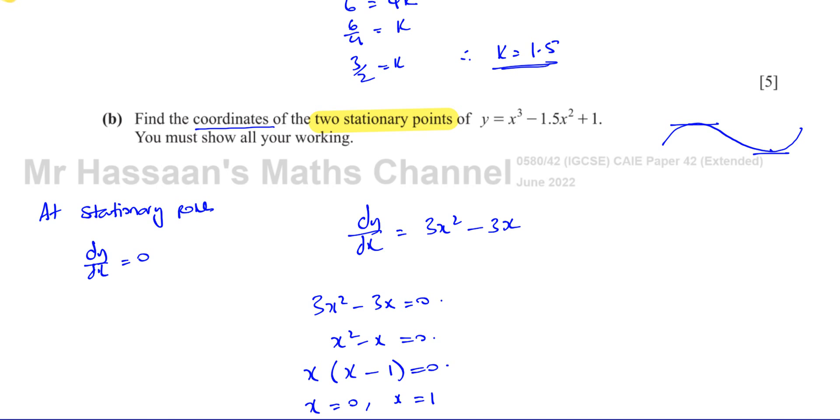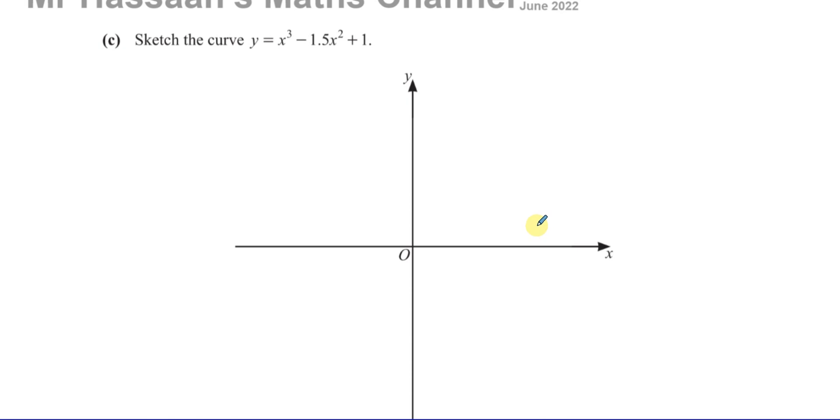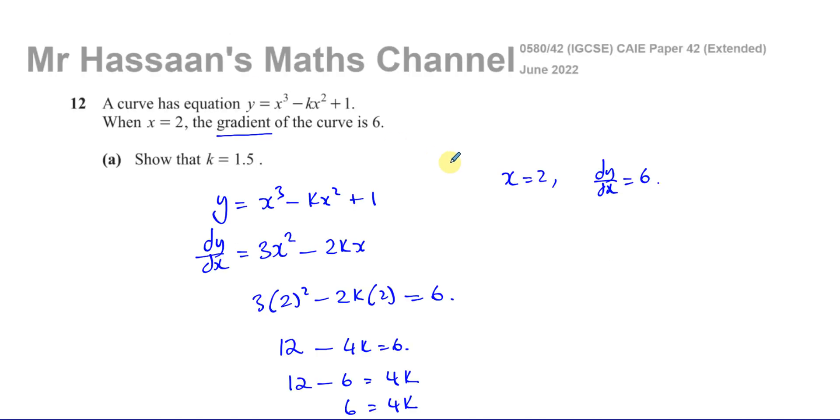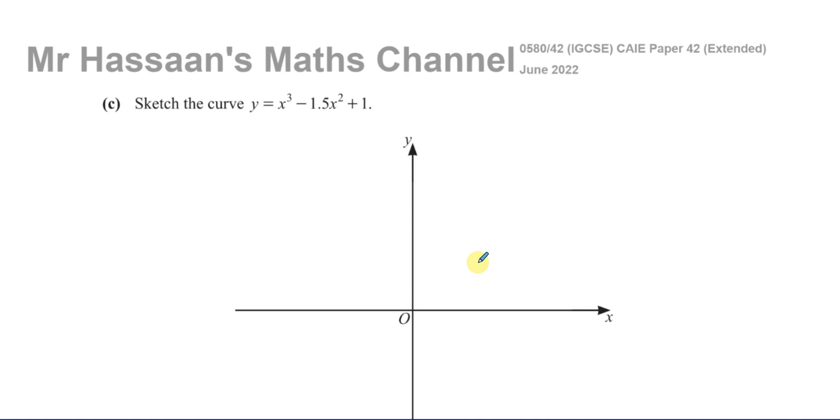That's part b and part c. Yes, this is about sketching the curve now. So this is a cubic curve. We know that this curve turns at the points 0, 1, and 1, 0.5, and it's going to have this type of shape. So we want to sketch this curve.